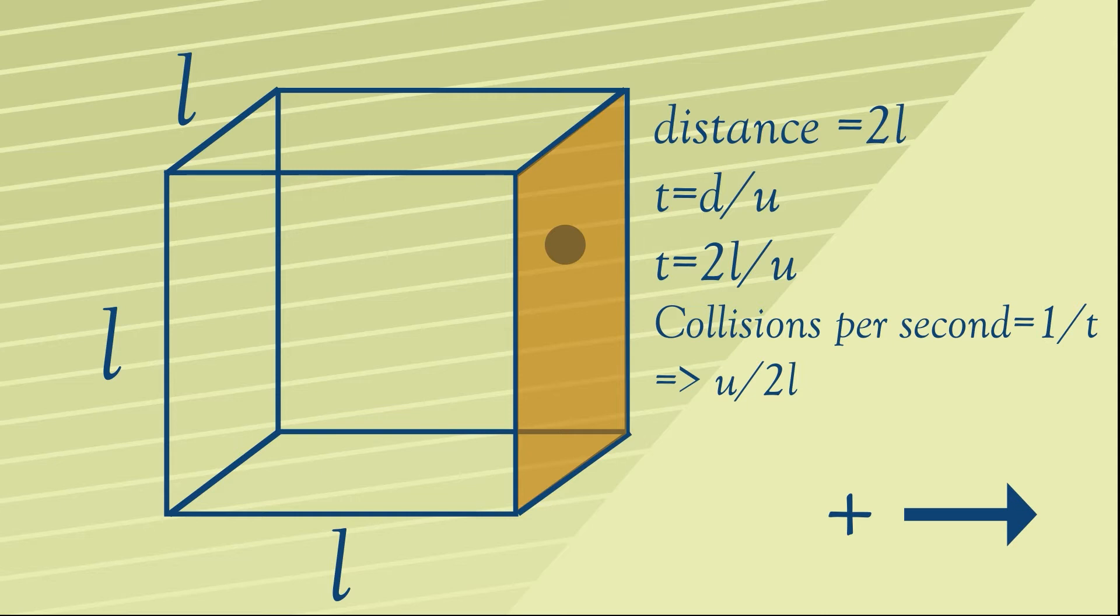In other words, the number of collisions in one second is going to be 1 over T, which equals U over 2L.